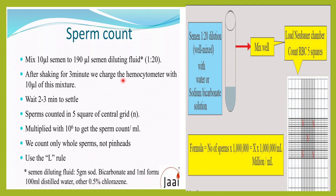What we do is mix 10 microliters of semen with 190 microliters of the semen diluting fluid. The semen diluting fluid contains bicarbonates, formalin, etc. After mixing well and shaking for 3 minutes, this is charged into the hemocytometer. Then 10 microliters of this mixture is put into the hemocytometer and we wait 2 to 3 minutes for it to settle down.